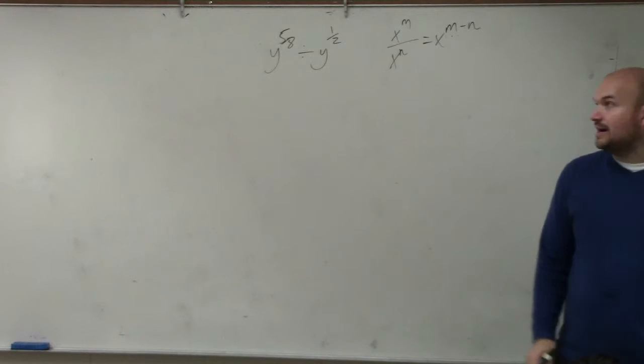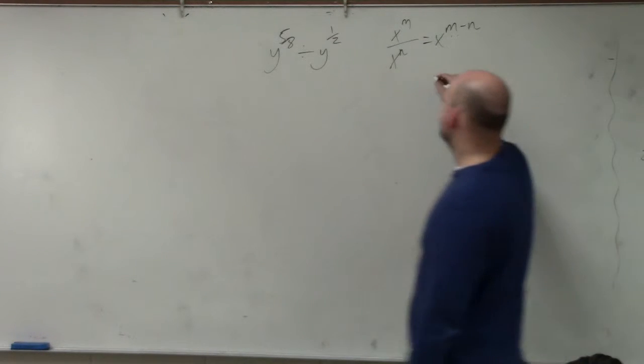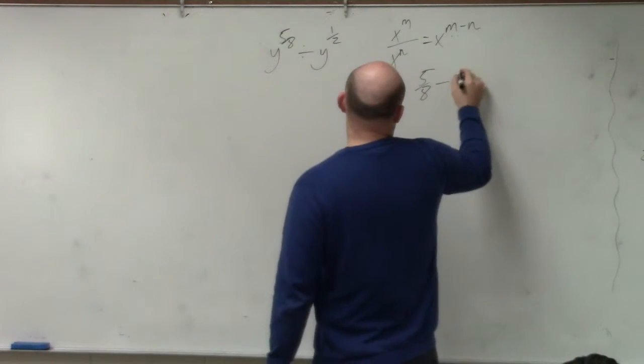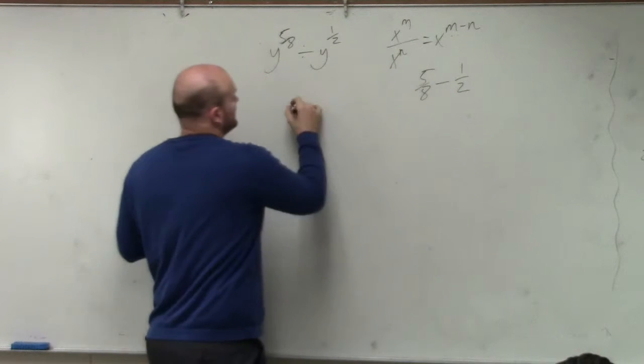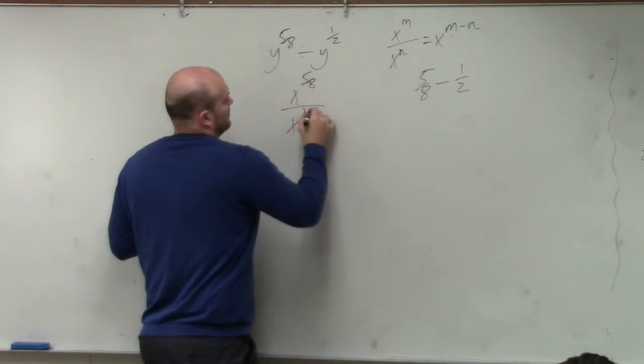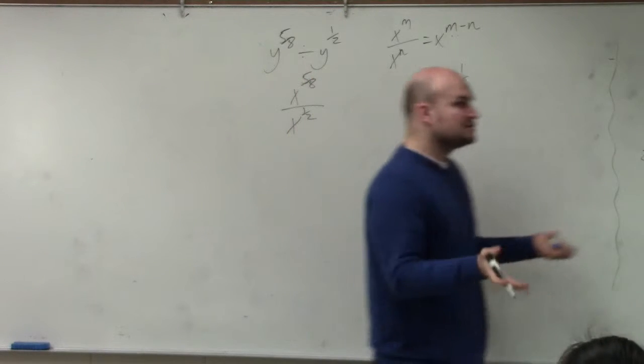So all we simply need to do is subtract our powers. I have 5 eighths minus 1 half, right? Because this can be written the same way. So now I just need to subtract my powers.